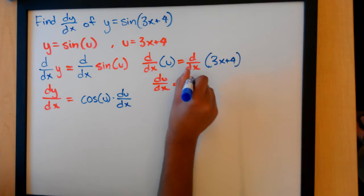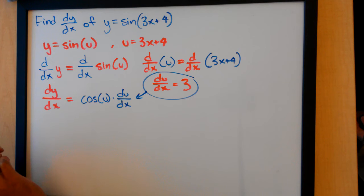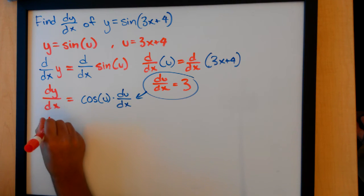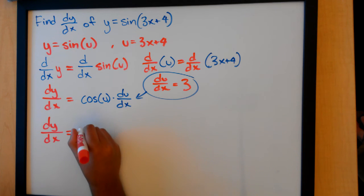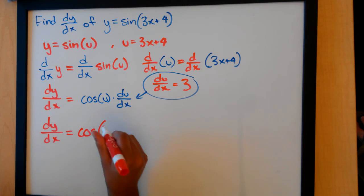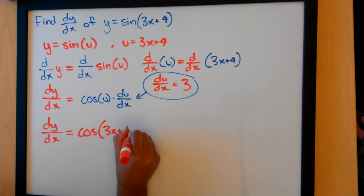And so using this, we plug that in to get dy over dx equals cosine u. And so cosine u, instead of u, we plug in 3x plus 4, because that's what we defined u as.